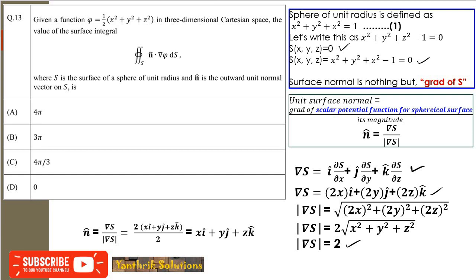The n̂ or outward unit normal is defined as the vector divided by its magnitude, where the vector is the gradient of the surface function. The modulus of del S (2x i + 2y j + 2z k) is 2.